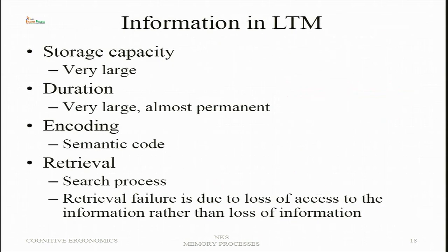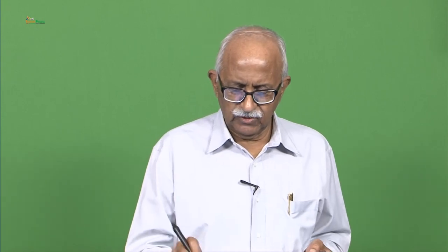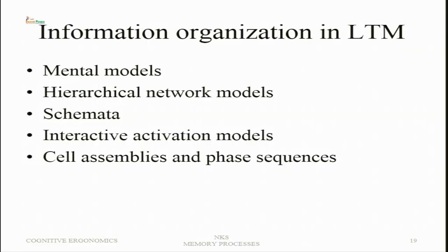Long-term memory has very large storage capacity and duration — it is almost permanent. Encoding is done in the form of a semantic code, meaning interrelationships among various information contents. Retrieval is through search processes, and retrieval failure is due to loss of access rather than loss of the information itself. Information organization in long-term memory can take various forms: mental models, hierarchical network models, schemata, abstract representations, interactive activation models, and cell assemblies and phase sequences.